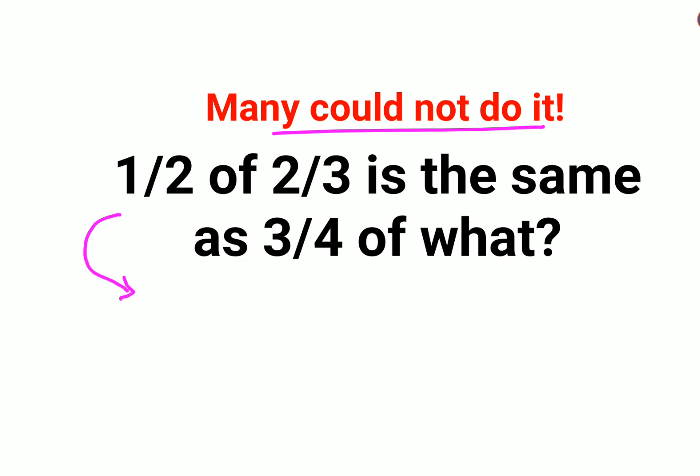They got the mathematical representation of this entire question wrong. So now the question is half of 2/3, that can be written as what? Half of means multiplication, 2 by 3 means 2 upon 3, equals - that means equals to 3/4 of what. So again, of means multiplication, and let that number be X.